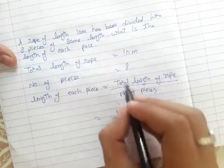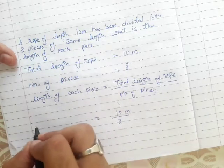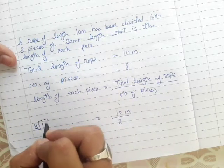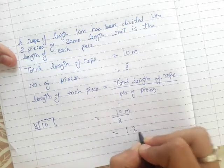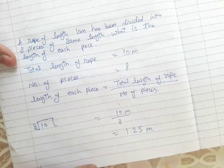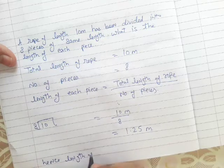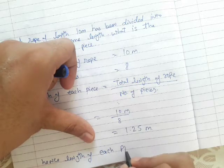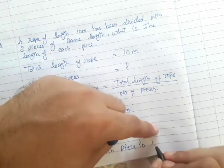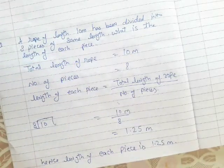Total length is 10 meters divided by 8 pieces. When we divide 10 by 8, it comes to 1.25 meters. Hence, the length of each piece is 1.25 meters. This is the answer to the question.